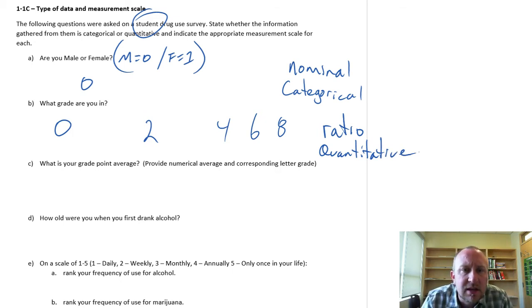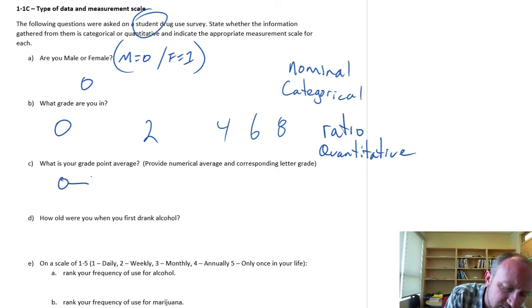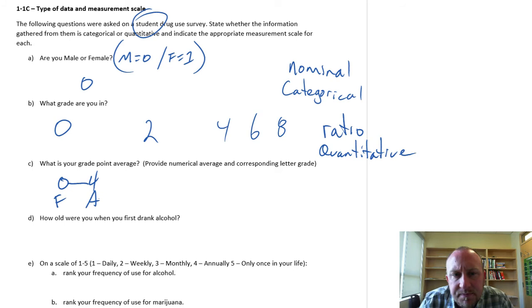Okay, moving on. C. This one's maybe a little bit more tricky. What is your grade point average? And it says provide numerical average and corresponding letter grade. So this is actually going to be measuring basically the same thing but on two different scales. So different universities, different schools will have a different scale or different way of measuring grades. Let's say that the grade point average is on a scale of 0 to 4. So a 0 would be an F and a 4 is an A.